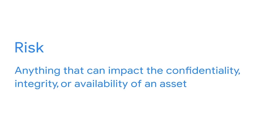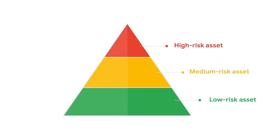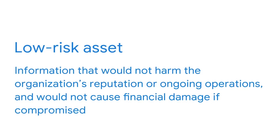Risks are different from threats. A risk is anything that can impact the confidentiality, integrity, or availability of an asset. Think of a risk as the likelihood of a threat occurring. An example of a risk to an organization might be the lack of backup protocols for making sure its stored information can be recovered in the event of an accident or security incident. Organizations tend to rate risks at different levels — low, medium, and high — depending on possible threats and the value of an asset. A low-risk asset is information that would not harm the organization's reputation or ongoing operations and would not cause financial damage if compromised.